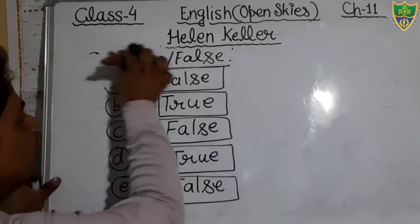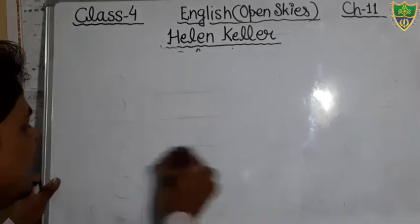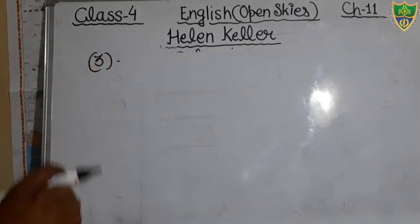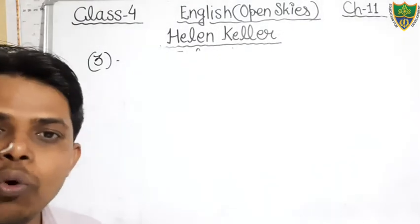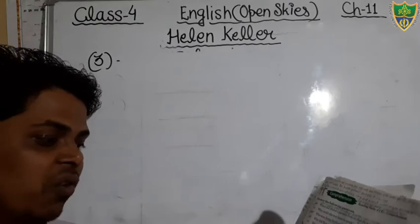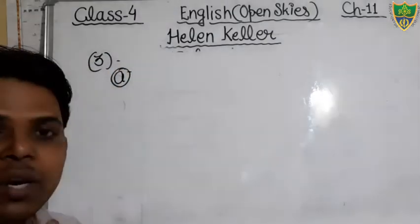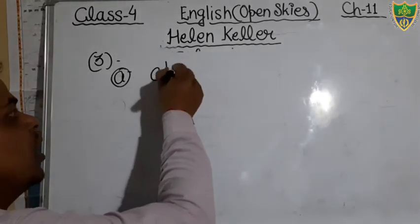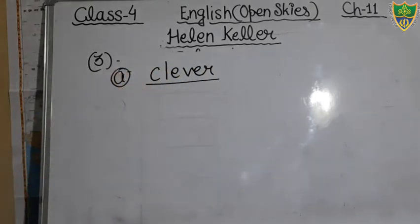Now we will discuss exercise number three, which is filling the blanks. Incomplete sentences are given and you have to choose the most appropriate suitable word to fill in the given blanks. Question A: 'Helen was a brave and blank girl.' You have to fill the word 'clever,' C-L-E-V-E-R. That is the most appropriate suitable word.